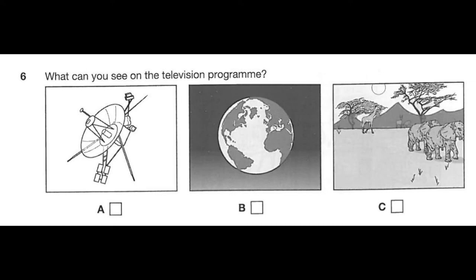Now listen again. Coming up next on the Science Channel is the latest documentary produced and presented by photographer Daniel Hamilton, who made the prize-winning series about African animals, which you may have seen last year. His latest series is simply called Earth, and viewers can enjoy some amazing photography, with pictures of the planet shot from cameras in space using the latest satellite technology. So sit back, relax, and enjoy.